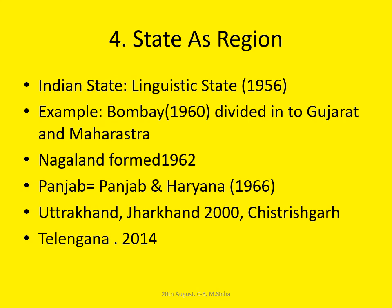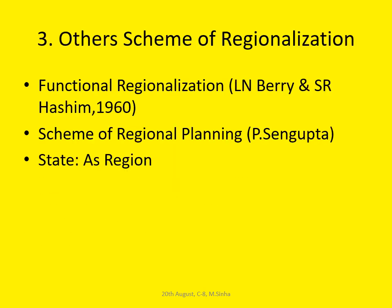When talking about regionalization schemes in India, out of the three principal schemes — economic, physiographic, and planning — there is another cultural regionalization scheme: state as a region, where all states are linguistic states. Other important schemes include the Functional Regionalization Scheme of Berry, the scheme of Regional Planning of S.P. Sengupta, and the state as a region — a delineation or regionalization scheme of India on the basis of culture.